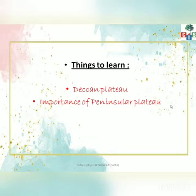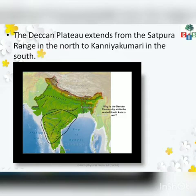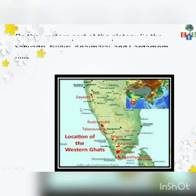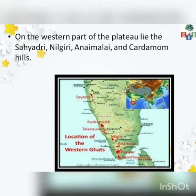Now we will go ahead with the Deccan Plateau. The Deccan Plateau extends from the Satpura Range in the north to Kanyakumari in the south. On the western part of the Plateau there are many hills — Sahyadri hills, Nilgiri hills, Anamalai hills, and Cardamom hills. These are the hills found in the western part of the Deccan Plateau.